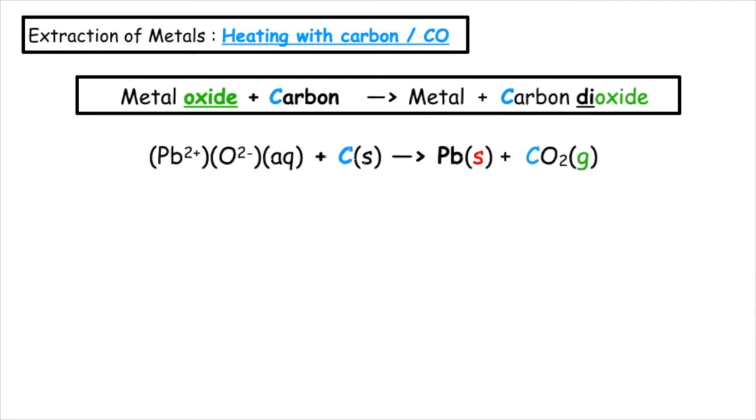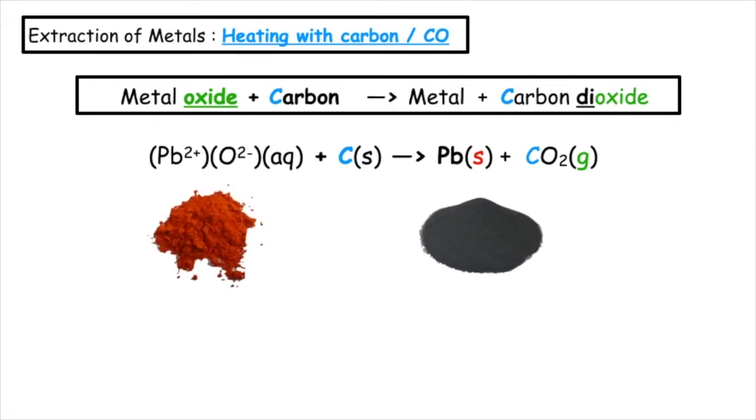So if we take a metal oxide such as lead oxide which has an orange color and we react it with carbon in a little bit of heat, we will produce the lead metal and carbon dioxide gas. What we can see and observe from this experiment is the orange powder changes to a black powder.